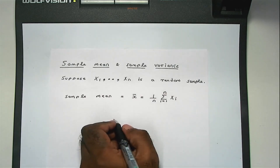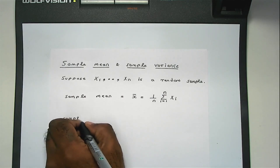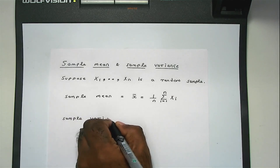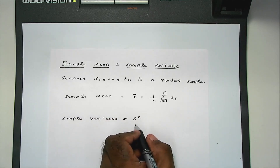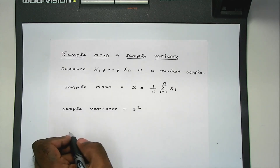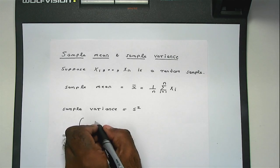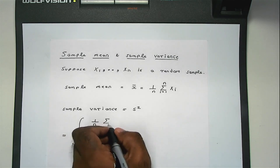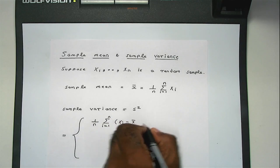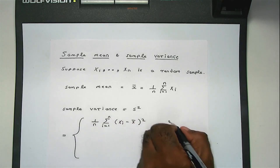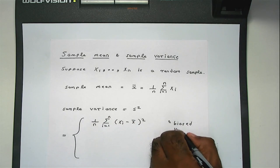The sample variance is denoted by s squared. There are two different definitions. The first one is 1 over n times the sum of — and this is known as a biased equation, this is a biased version of the definition of sample variance. I will explain why this is the case later in the course.